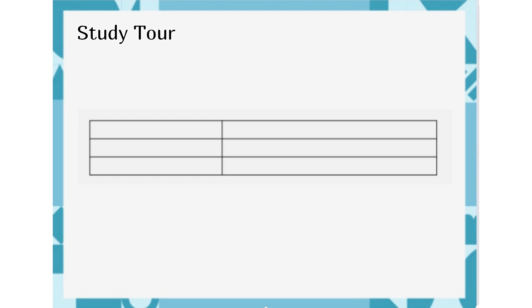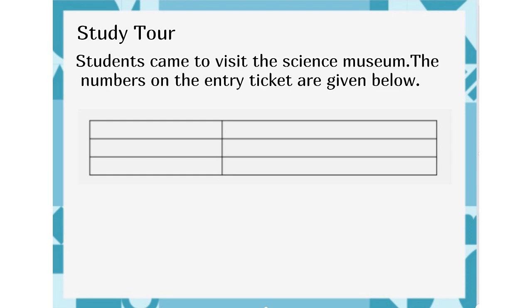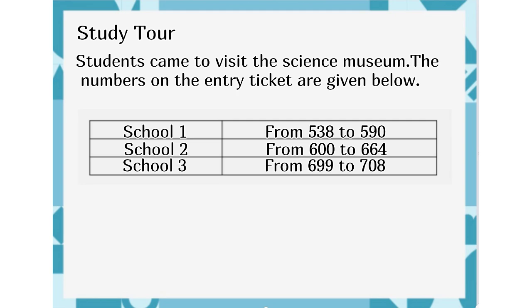Study Tour. Students came to visit the Science Museum. The numbers on the entry ticket are given below. School 1 from 538 to 590. School 2 from 600 to 664. School 3 from 699 to 708. A. How many students came from School 1?